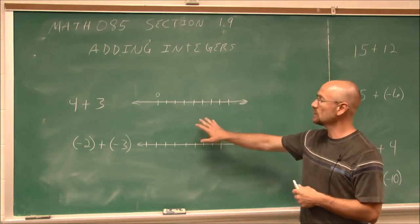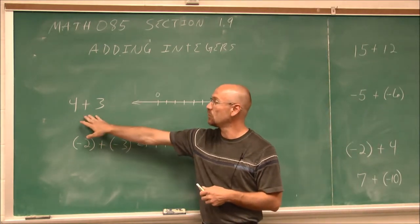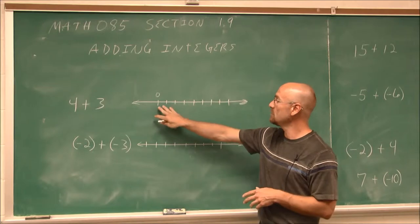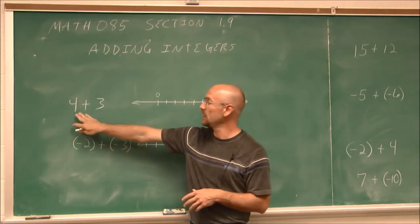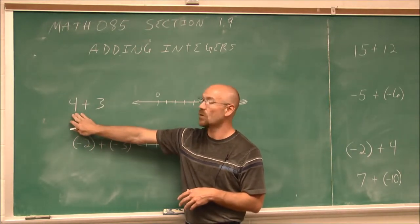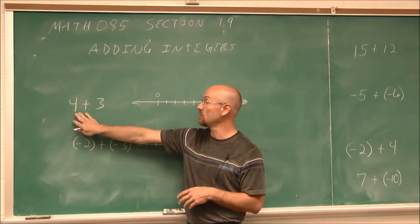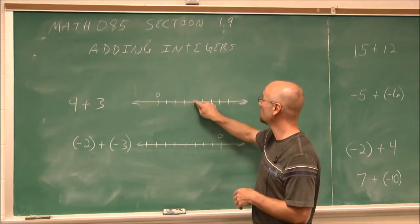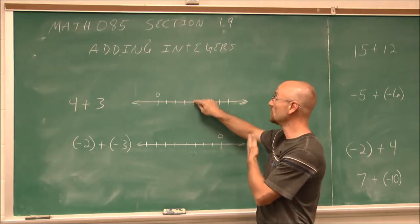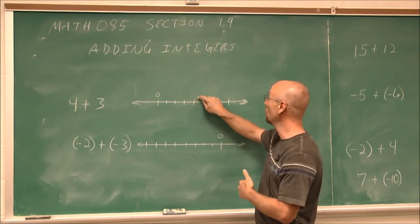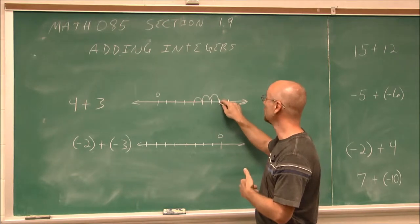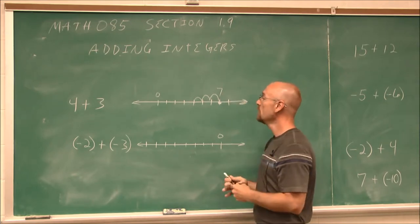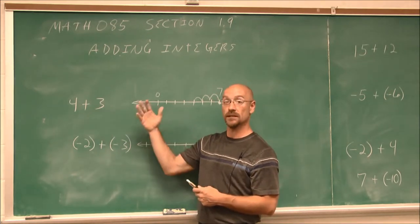The first thing we're going to do is look at adding using our number line: 4 plus 3. These integers are both positive. If I add them on a number line, I start at 4 and go to the right 3 units — 1, 2, 3. Here I am. If I count how many units away I am, I'm 7 units away. That makes sense, because 4 plus 3 is 7.